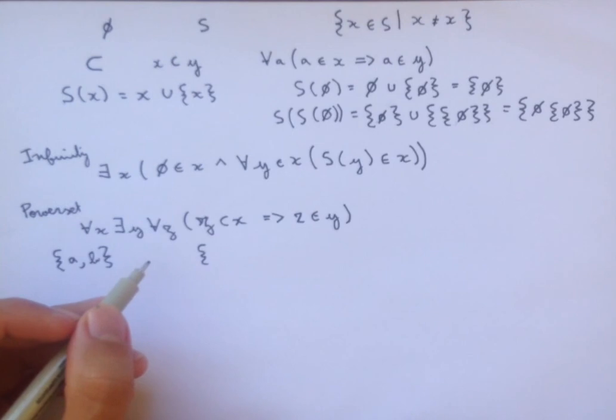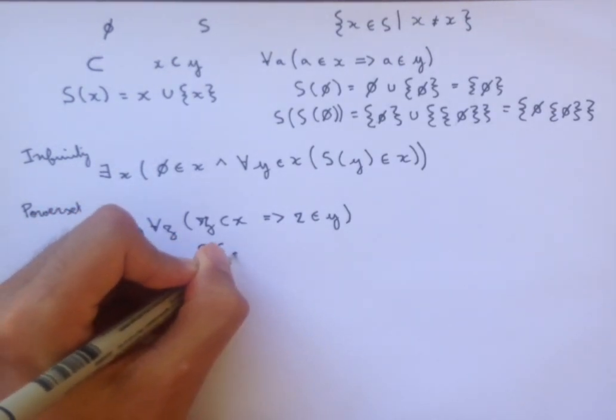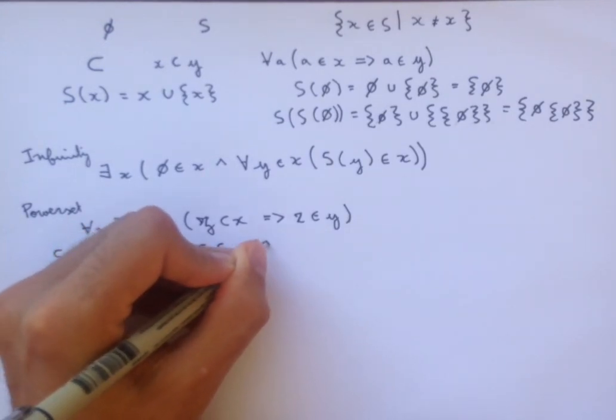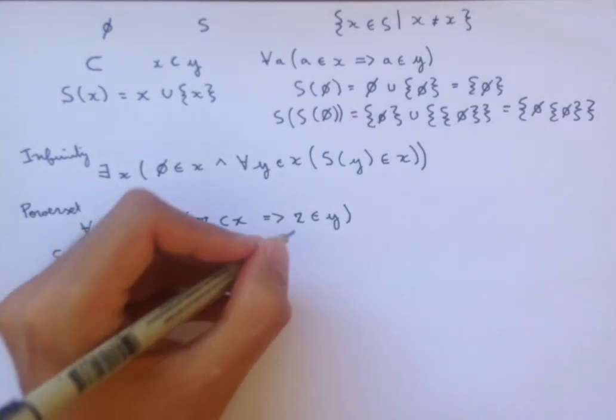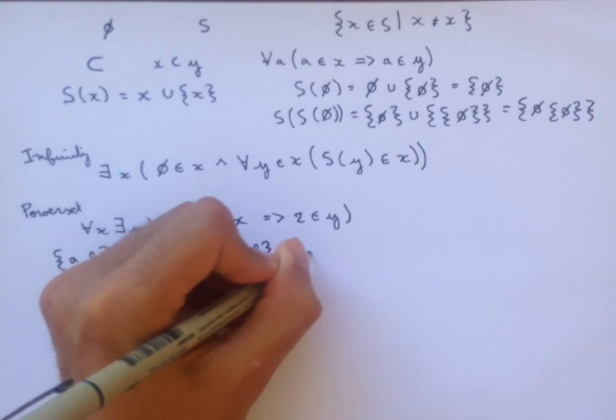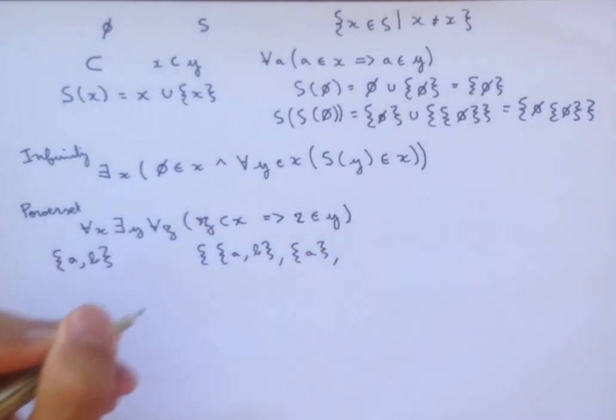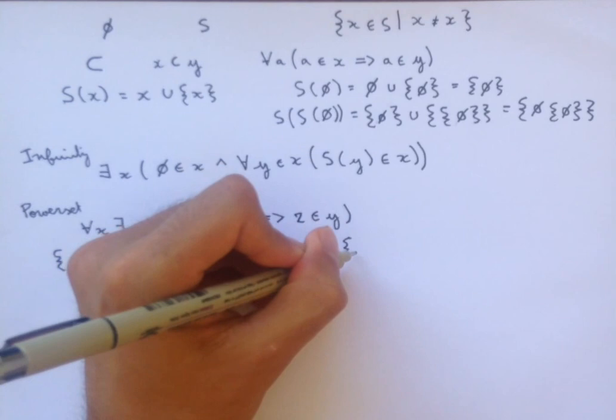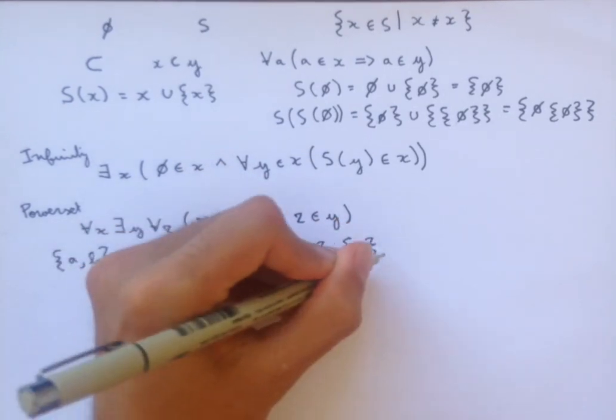It's going to have every single subset. So, one subset of A and B is going to be the set A and B itself. Another is going to be the set containing A. And then we have also the set containing B. And finally,